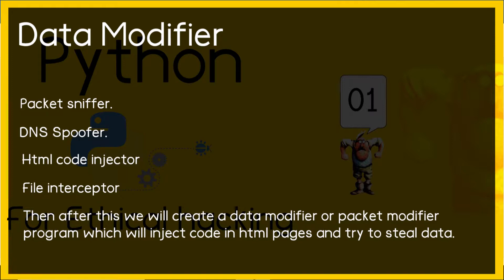Then we'll create a data modifier — or packet modifier — program which will inject code into HTML pages and try to steal data. This will involve writing several programs: a packet sniffer, a DNS spoofer, an HTML code injector, and a file interceptor.